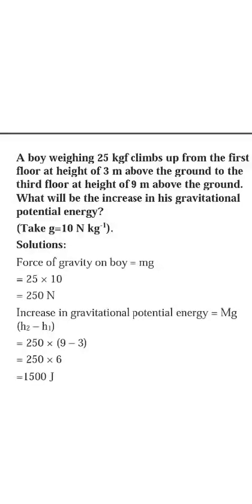A body weighing 25 kgf climbs from the first floor at a height of 3 meters to the third floor at a height of 9 meters. Find the increase in gravitational potential energy. The change in height is from 3 to 9, that is 6 meters. Using mgh with h = 6: mass is 25, g is 10, times 6 gives 1500 joules.